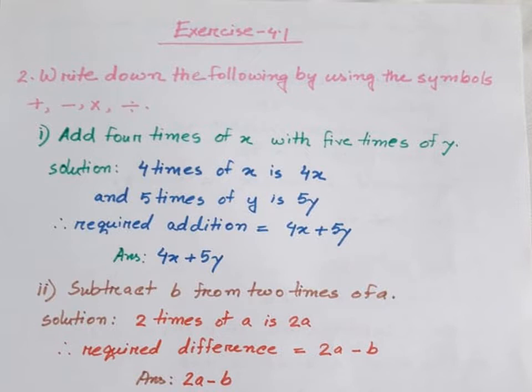The terms and lines will be expressed in the same way. Let us see the first one. Number 1: Add 4 times of x with 5 times of y. The question is that we will add — 4 times of x plus 5 times of y.